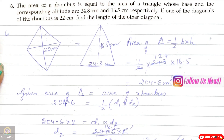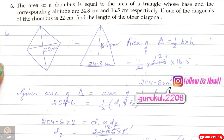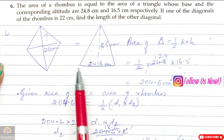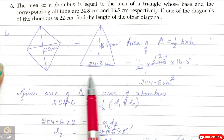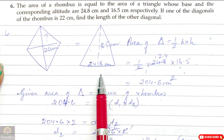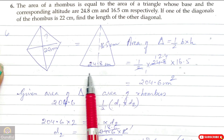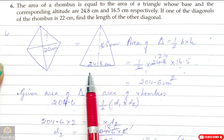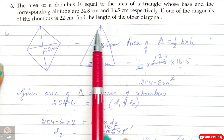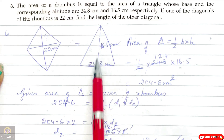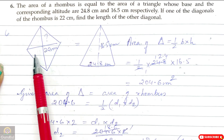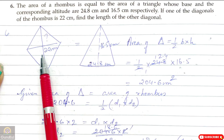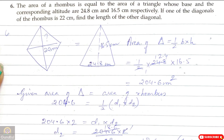Question number 6: The area of a rhombus is equal to the area of a triangle. This is a rhombus whose area is equal to the given triangle whose base and the corresponding altitude are 24.8 cm and 16.5 cm respectively. Now if one of the diagonals of the rhombus is 22 cm, we need to find the length of the other diagonal.